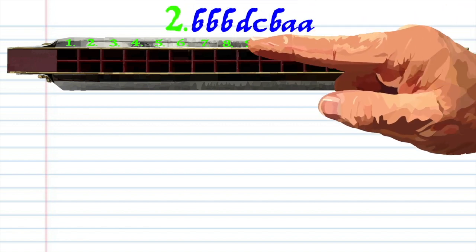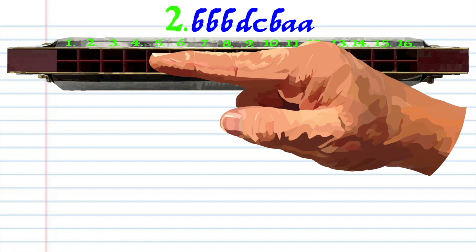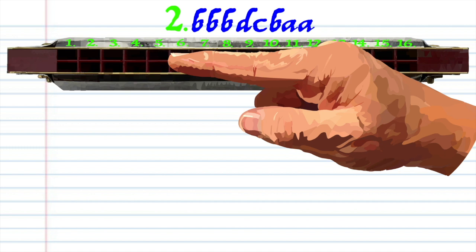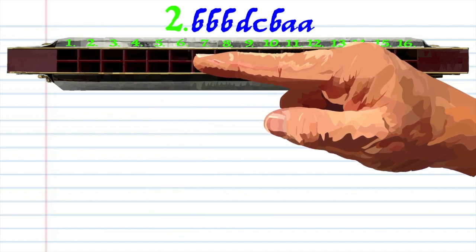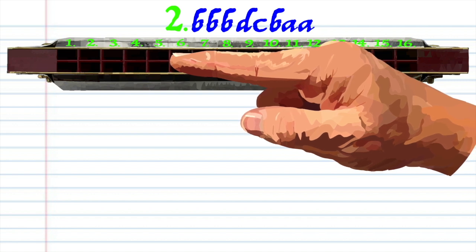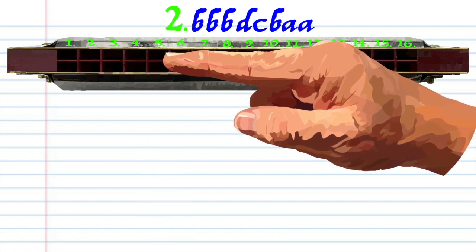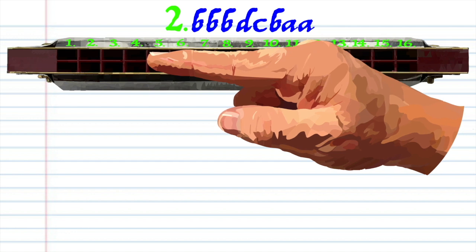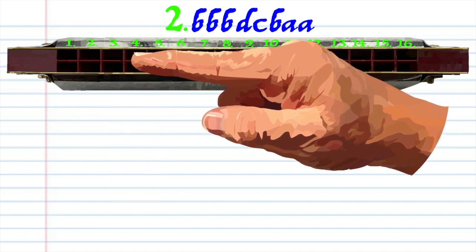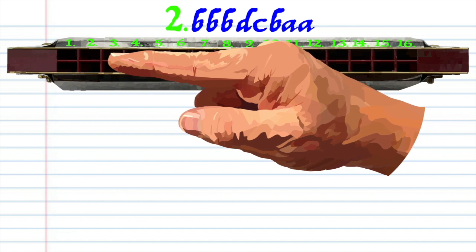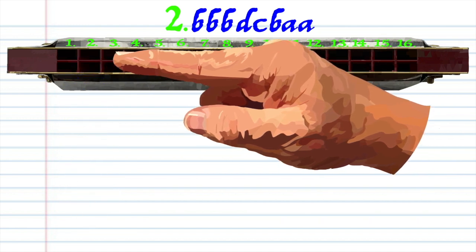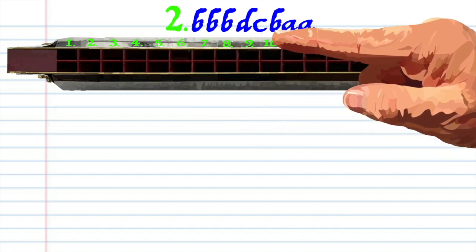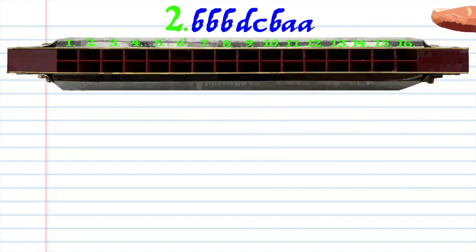For phrase 2, breathe in through 4 three times, breathe in through 6, blow into 5, breathe in through 4, and breathe in through 2 twice. Practice this until you end up with something that sounds like this.